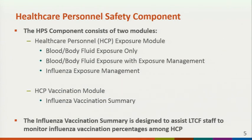As shown on the previous flow chart, there are two modules within the healthcare personnel safety component: the healthcare personnel exposure module and the healthcare personnel vaccination module. Facilities can report the healthcare personnel influenza vaccination summary data using the vaccination module. The summary level reporting replaces individual level reporting of vaccination status of healthcare personnel, which was previously available through NHSN.